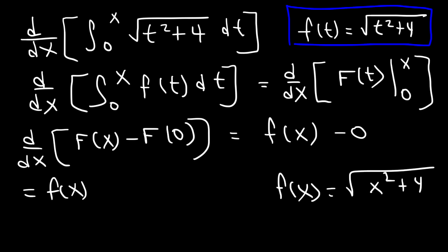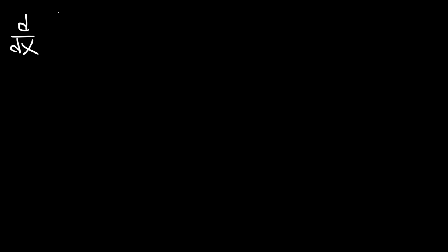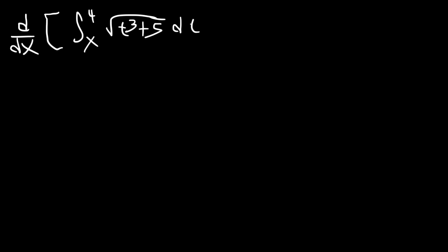Now if f of t is equal to the square root of t squared plus 4, then f of x is going to be the square root of x squared plus 4. And so this is the final answer to the entire problem. Now let's try another problem. Let's say it's the integral of the square root of t to the third plus 5 from x to 4.